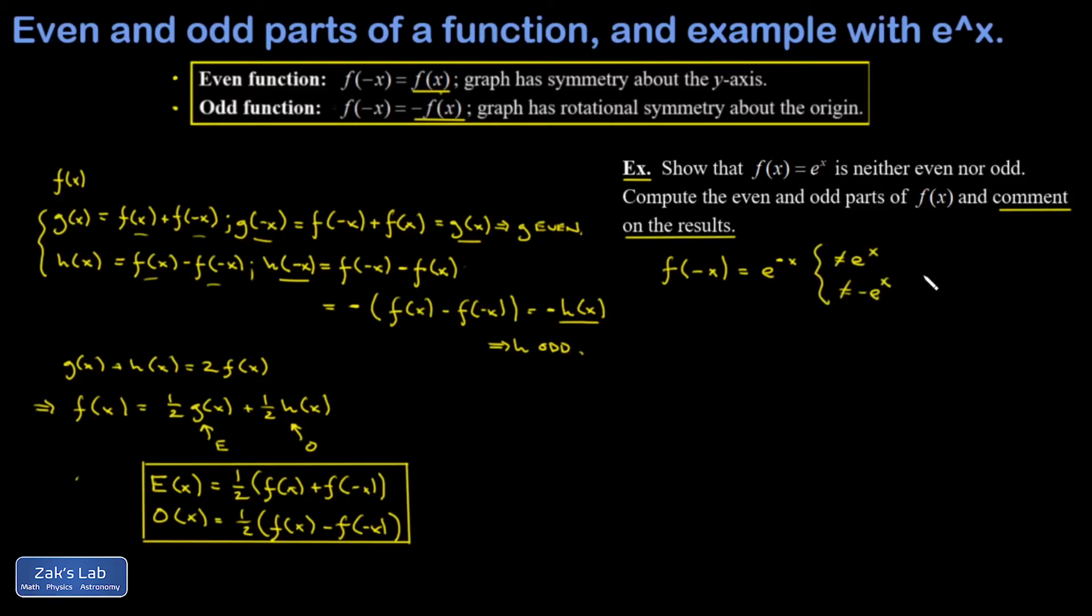And we've shown that e to the x is not even or odd. And if you think of the graph of e to the x it doesn't have even symmetry or odd symmetry so this is not a surprise. So let's get the even and odd parts of e to the x.